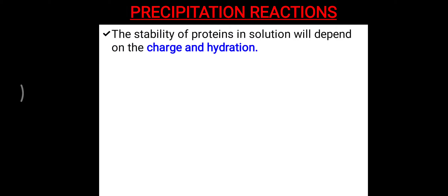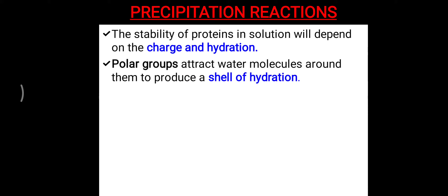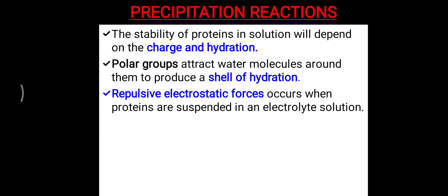Before that, proteins are stable in solution because of the presence of charge and the shell of hydration surrounding the protein molecule. Protein molecules contain different polar groups like amino groups and carboxylic groups, which attract water molecules around them to produce a shell of hydration. This shell of hydration keeps them soluble in solution, and when it is broken down, that leads to the precipitation of the protein.